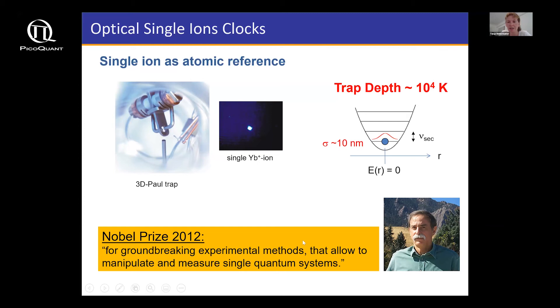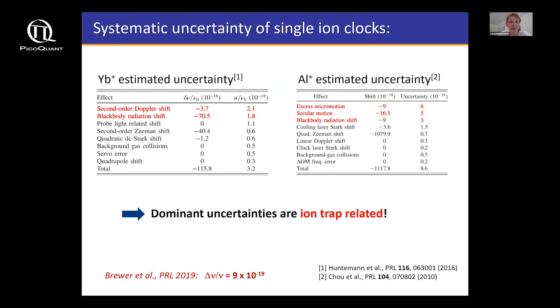To manipulate these trapped ions and to do laser spectroscopy on them, that was another Nobel Prize awarded in 2012. It was Dave Wineland who received this Nobel Prize for groundbreaking experimental methods that allow manipulating and measuring single quantum systems. He trapped single ions in such a Paul trap, manipulated them with lasers, built some of the first atomic clocks. Also, his group is competing with our group at PTB. Both groups have now achieved 10 to minus 18 in the setups.